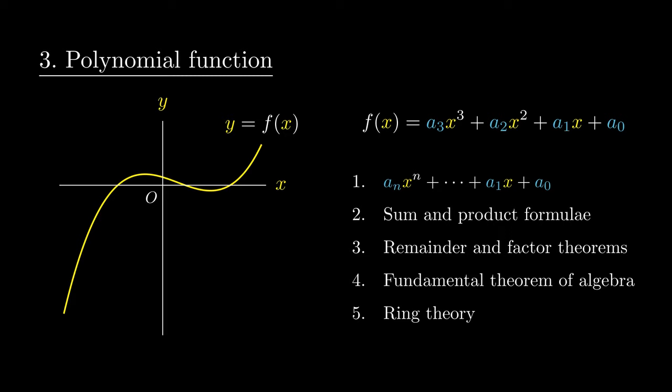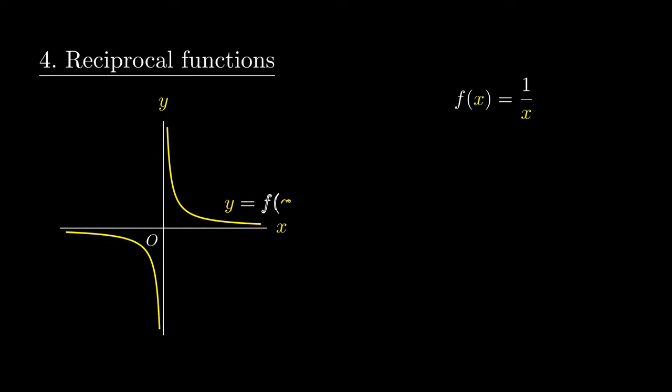On the flip side, we could consider this idea of reciprocal functions, which are functions of the form 1 over x. The graph comes in two different branches, and the x and y-axis are known as the asymptotes of the function.